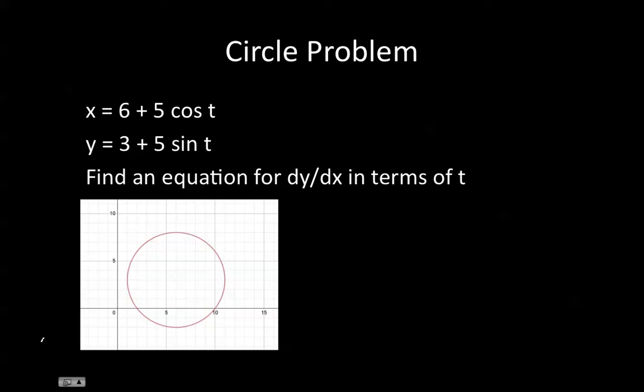Now we're going to move on to a circle problem. Here we have a circle written in the form of a parametric equation: x equals 6 plus 5 cosine t and y equals 3 plus 5 sine t. Here's a graph of the circle.